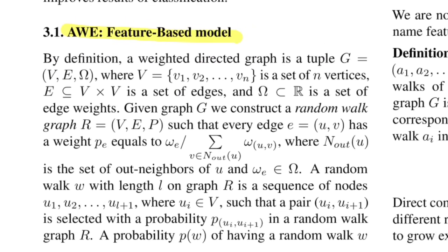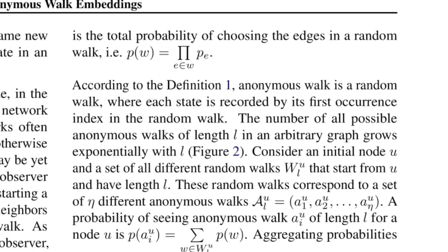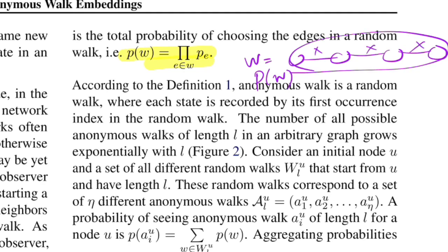Now let's talk about the algorithms, starting with the feature-based model. Consider a weighted directed graph G as a tuple of V, E, and Omega — V is the set of vertices, E is all edges, and Omega is edge weights. A random walk R normalizes each edge weight based on the summation of out-degree weights of the current node. A random walk W of length L is a sequence of nodes U1 to UL+1, where each edge weight is the probability of selecting that edge. The probability of an entire walk is calculated as a product of the independent probabilities of all edges in that walk.